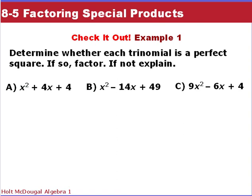So here are three Check It Outs to do. Make sure these are perfect squares — in this case, those are all perfect squares. Then check your B term and see if that holds true.